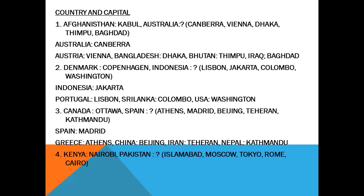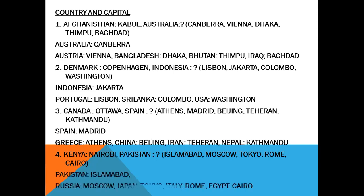Next: Kenya — Nairobi. Pakistan — what? Options: Islamabad, Moscow, Tokyo, Rome, Cairo. Islamabad is the capital of Pakistan. Moscow is the capital of Russia. Tokyo is the capital of Japan. Rome is the capital of Italy. And Cairo is the capital of Egypt.